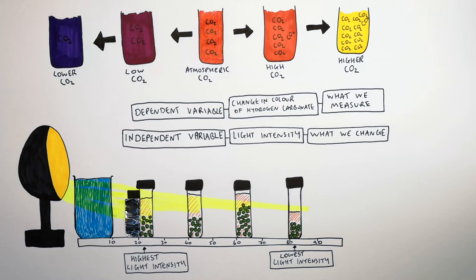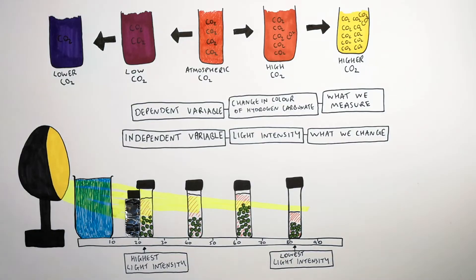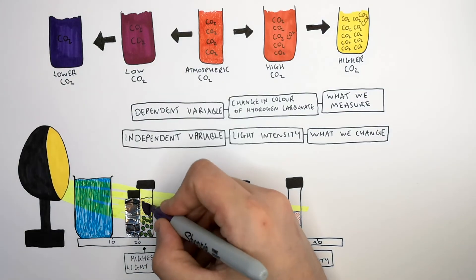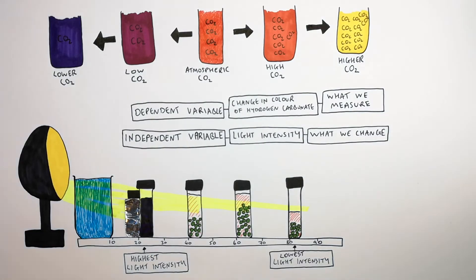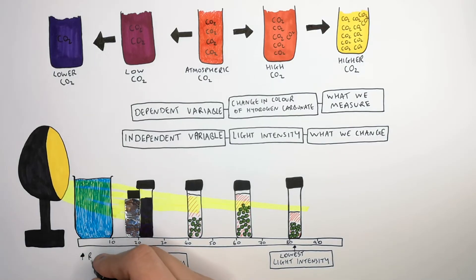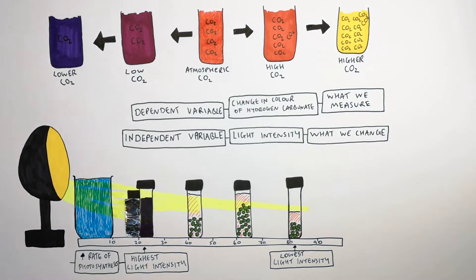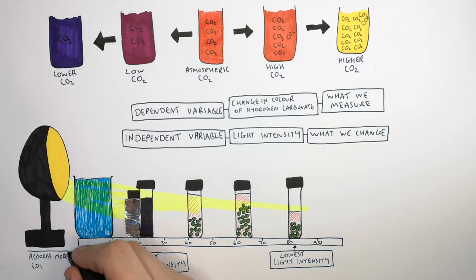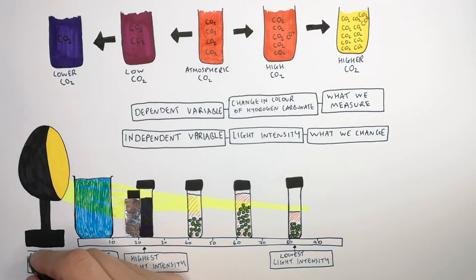In the flask closest to the light, where there is higher light intensity, you're going to have a higher rate of photosynthesis. That means the algal balls are going to absorb more carbon dioxide from the flask solution, decreasing the CO2 in the indicator solution. This means the indicator should turn a darker purple, because higher photosynthesis leads to increased absorption of carbon dioxide into the algal balls.